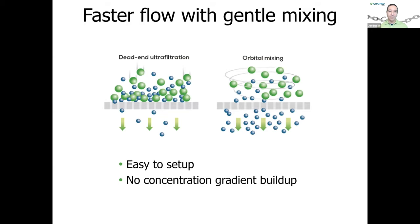We often get asked why we mix. Dead-end ultrafiltration will concentrate your protein at the membrane surface, eventually slowing down flow, potentially fouling your membrane, and potentially impacting protein quality. With orbital mixing, we keep the solution uniform — very similar to a TFF process — which allows faster flow through the membrane, faster exchange, and better protein quality at the end.